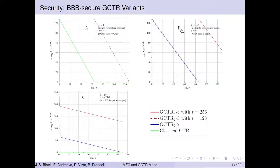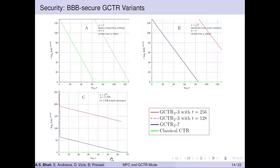Plot B shows the nonce-misuse setting (x > 1). When nonce is misused even once (x=2), GCTR7's security degrades to birthday-bound in N, and the same applies to GCTR3 when the tweak size is up to n bits. But for larger tweaks, GCTR3 still gives higher security. Plot C shows the adversarial advantage as a function of maximum nonce repetitions: for higher nonce repetitions, security degrades faster, but GCTR3 with larger tweak size still shows slower security degradation than other variants.